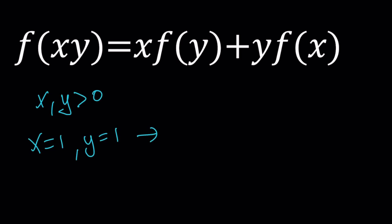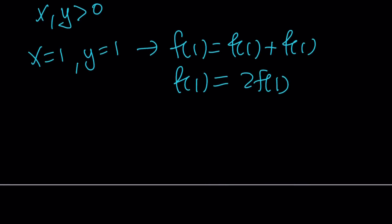x can be 1 and y can be 1 at the same time. And this is going to give me f of 1 equals 1 times f of 1 plus 1 times f of 1. And this will give me f of 1 equals 2 f of 1. Cancel out f of 1, 1 equals 2. Uh-oh, that's not good. Obviously, that's a joke.